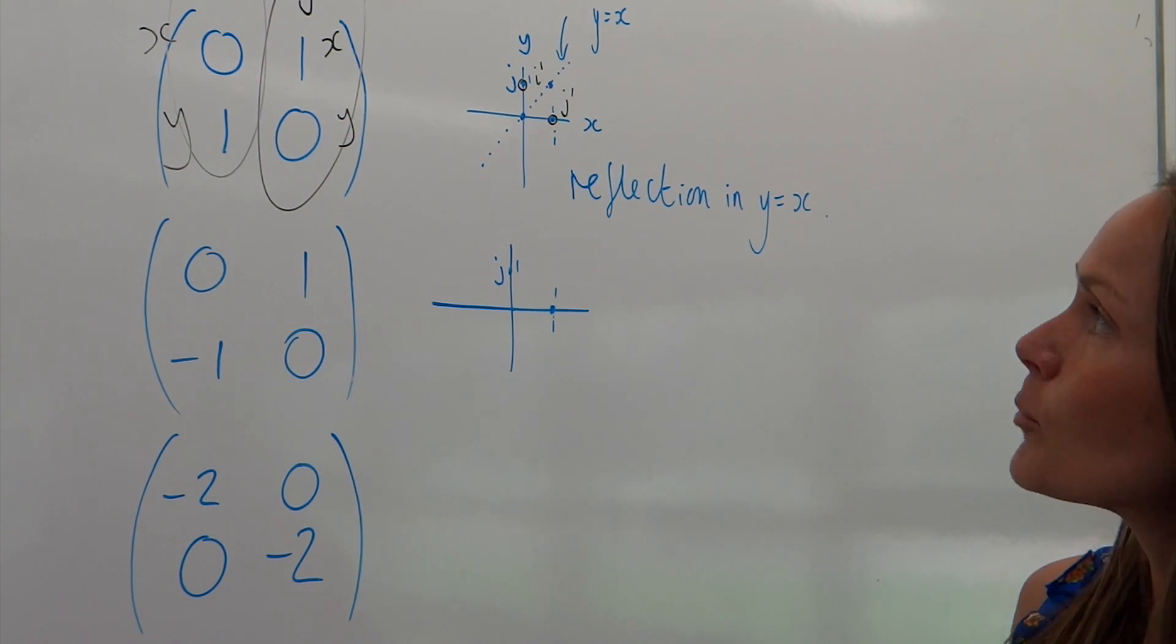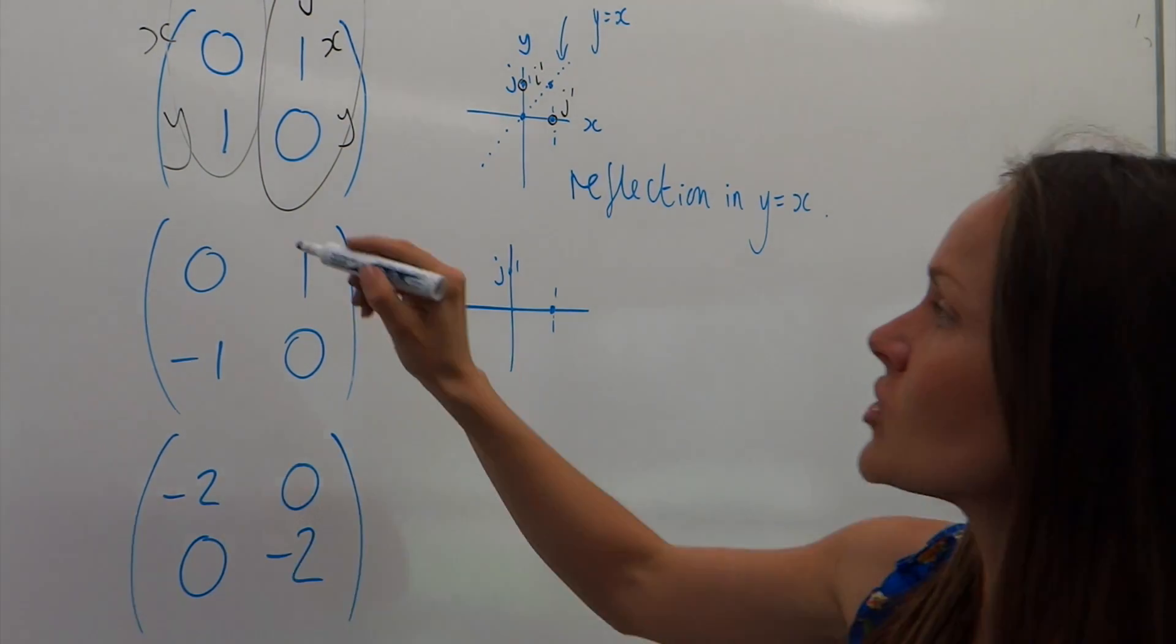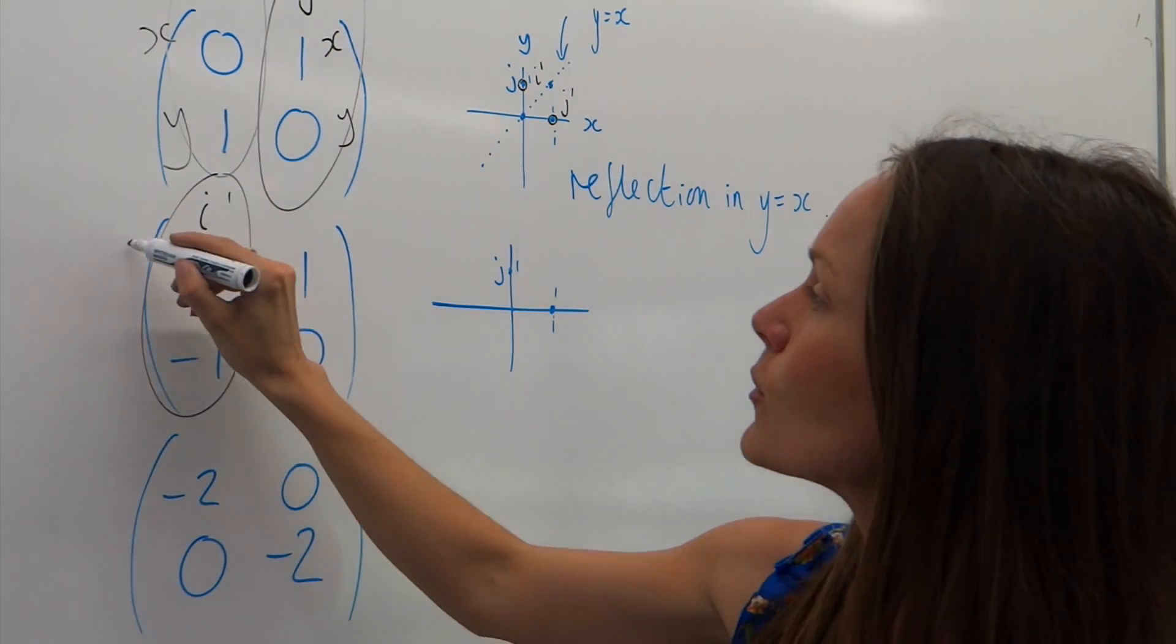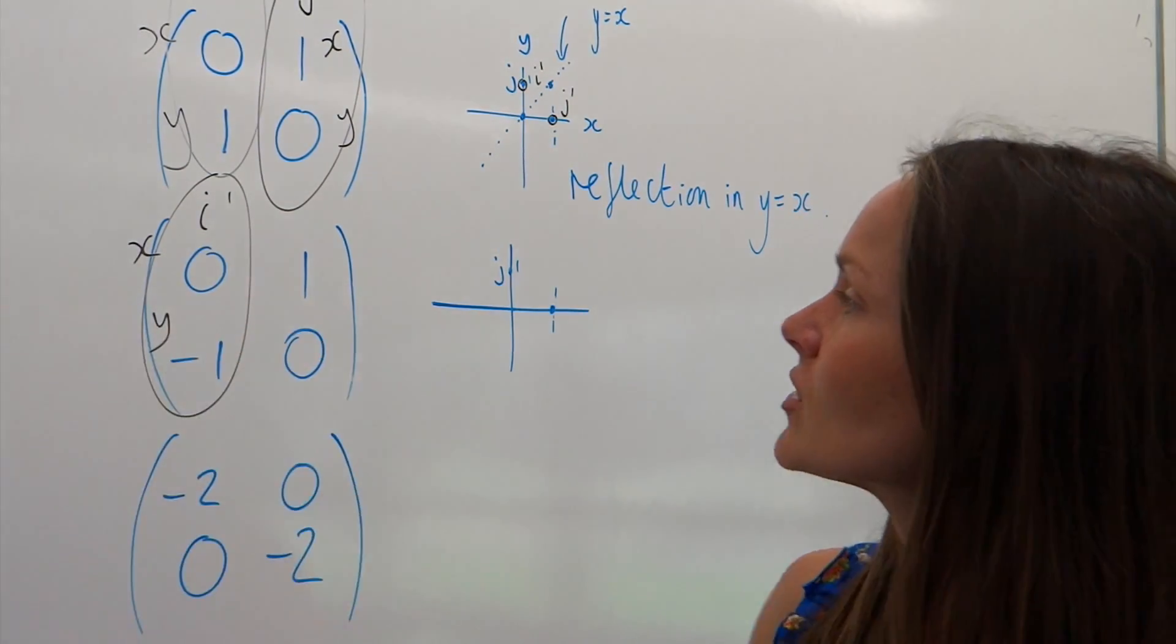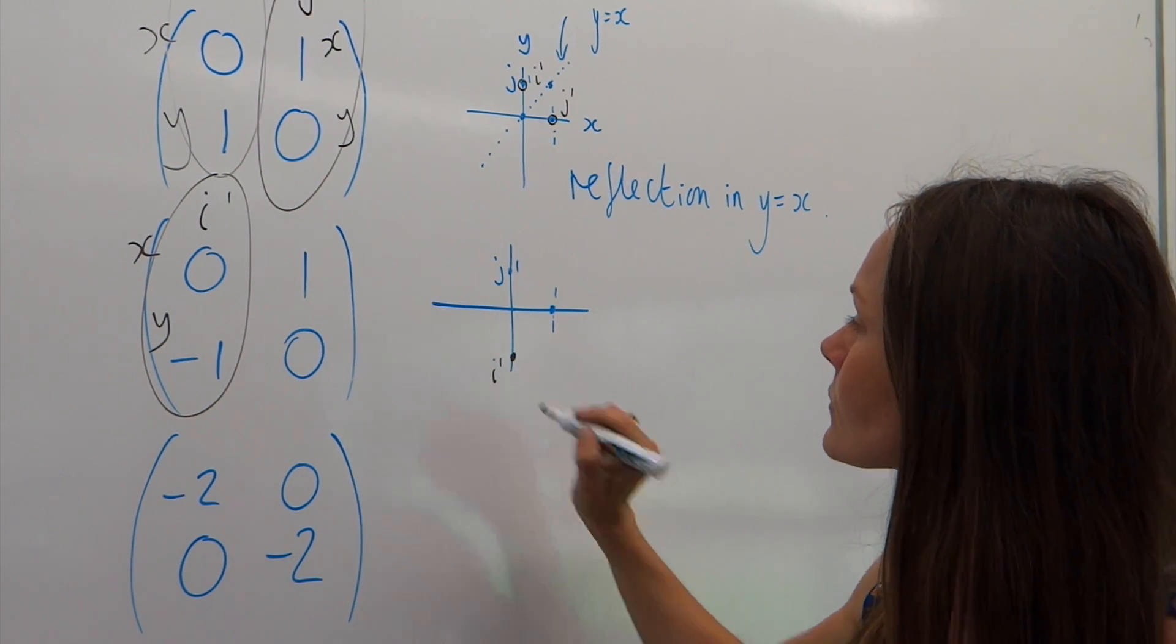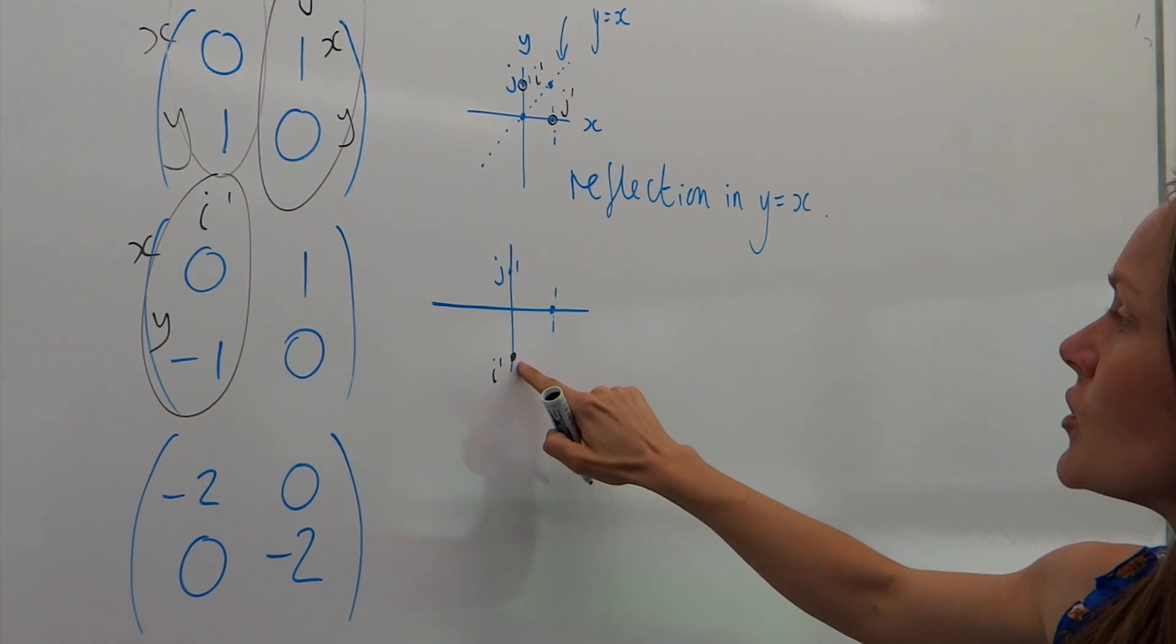So, just like in the previous example, i dash is given by this column here. So, these are the coordinates of i dash. So, this is the x coordinate, and this is the y coordinate. So, that would be here. So, i dash has moved to here.